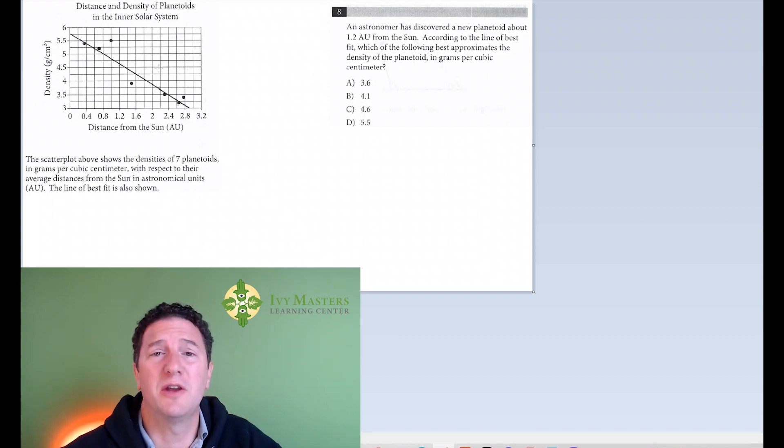We got to make sure we know what's going on in the graph before we read it. Up top we've got distance and density of planetoids in the inner solar system. We've got a line going down, which means as one thing is increasing the other thing is decreasing. As the distance from the Sun increases, the density of the planetoid decreases.